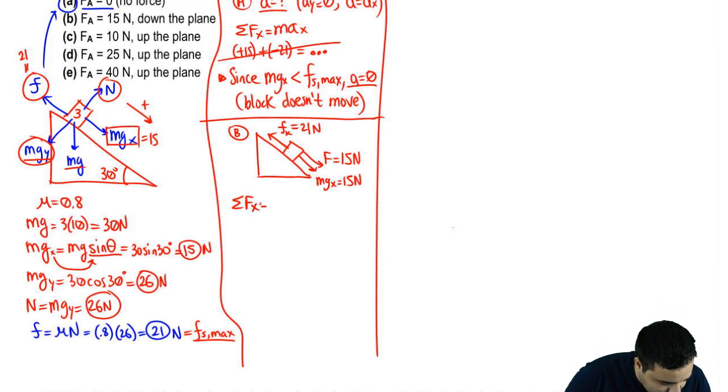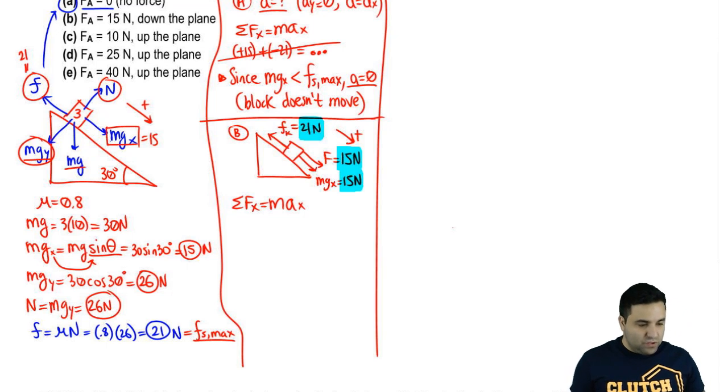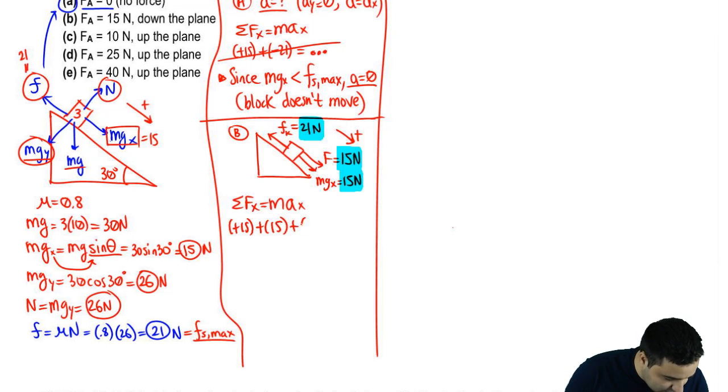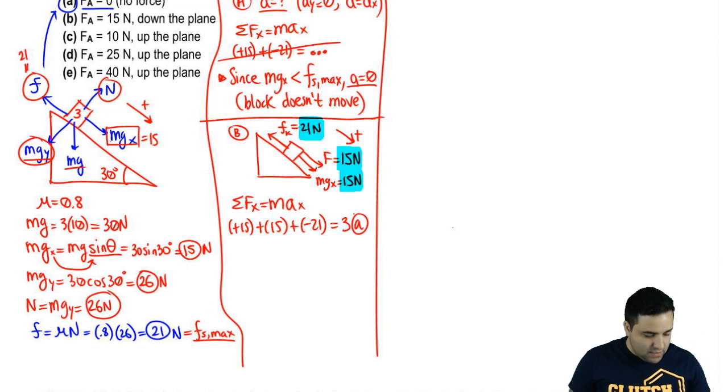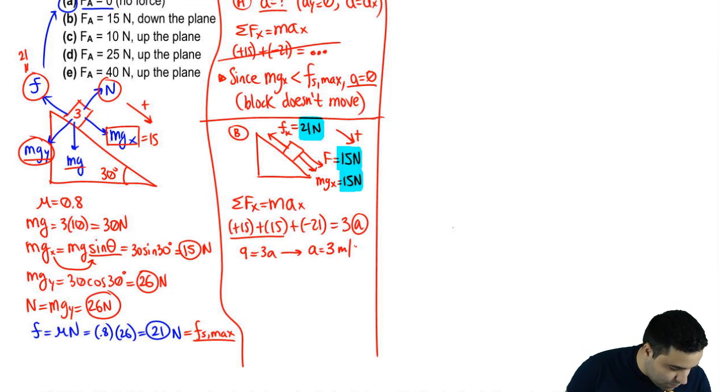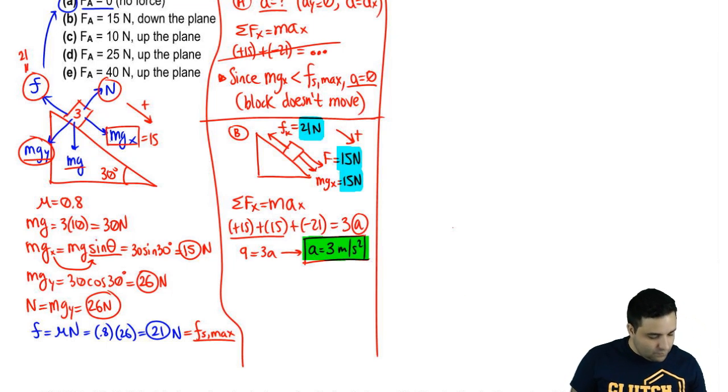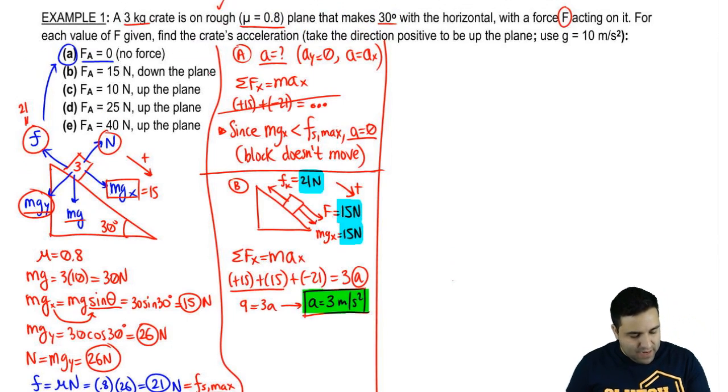To find the acceleration, we write sum of our forces equals ma. The forces are, this is the direction of positive. I have these two guys as a positive, this as a negative. So if you want to do this really quickly, you can just say I got 15 plus 15 plus negative 21 equals ma. The mass is 3, and then a is what we want. This is 30 minus 21 is a 9. So, the acceleration is 3 meters per second squared. That's it for that part. We got B down.